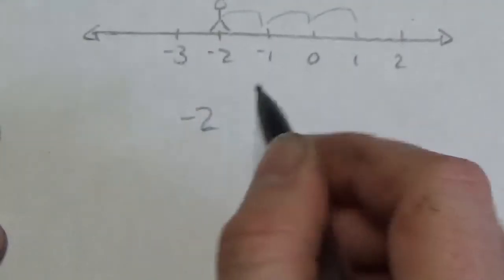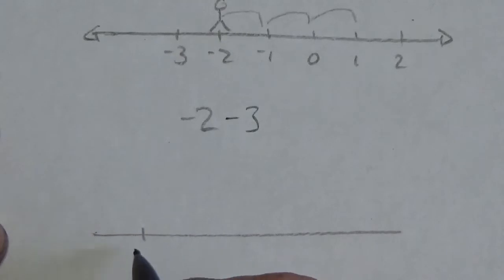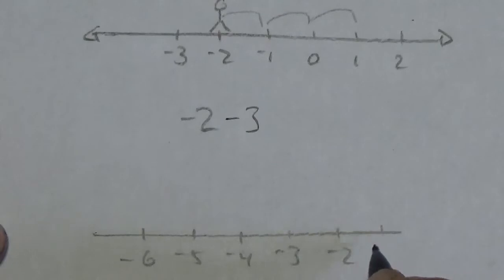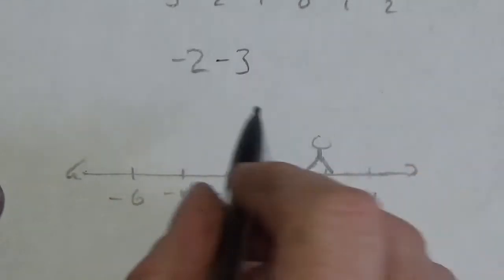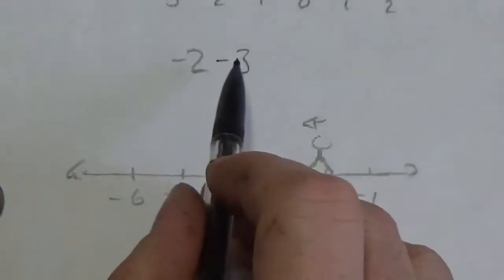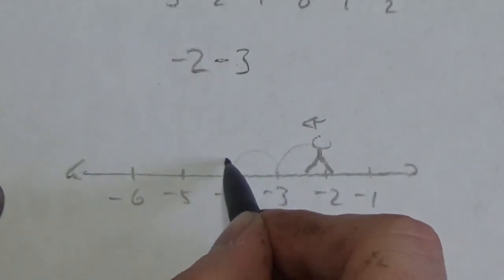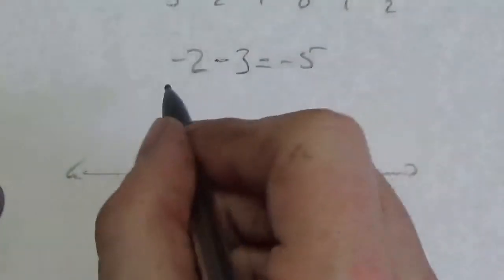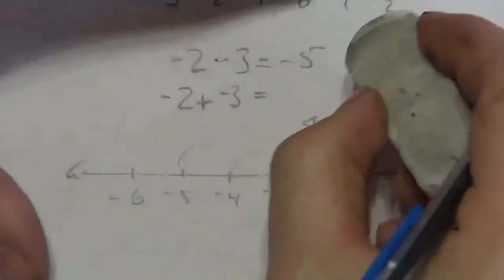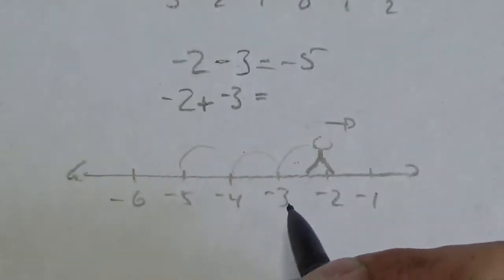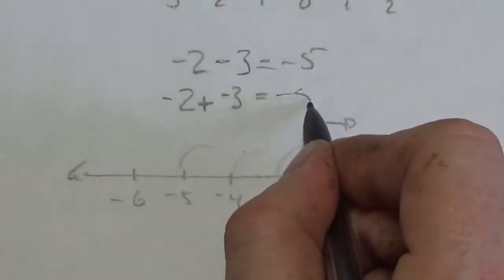But if I change this to negative two minus three — start at negative two, subtract means I face left, and three is positive so I go forward one, two, three facing left — that's going to be negative five. However, I could also interpret this as adding negative three. In which case I stand on negative two, face forward because it's addition, but because it's negative three I step backwards one, two, three — same result, negative five.